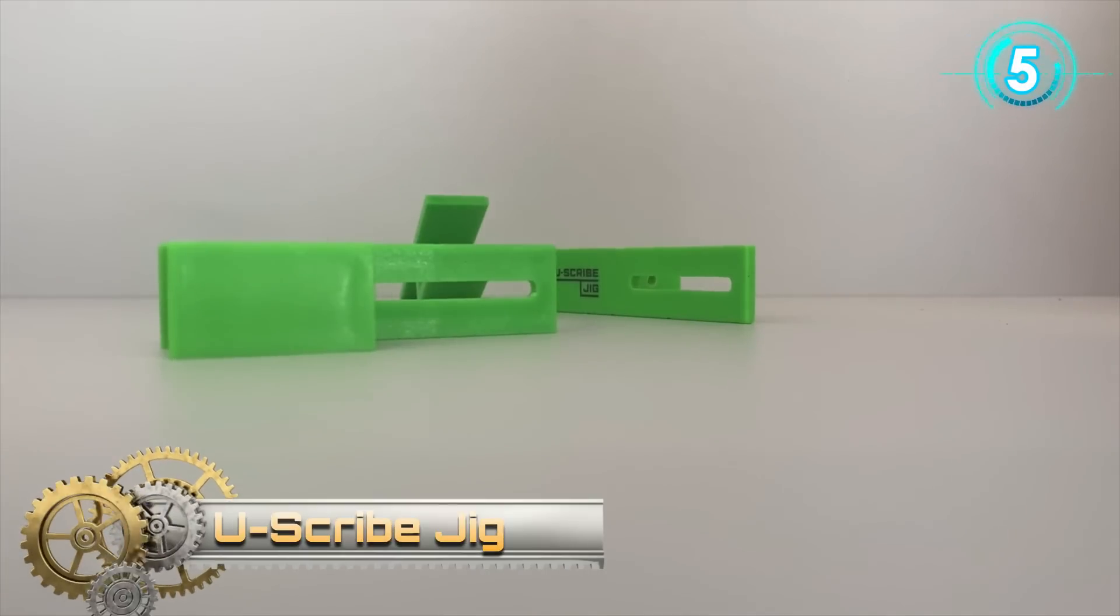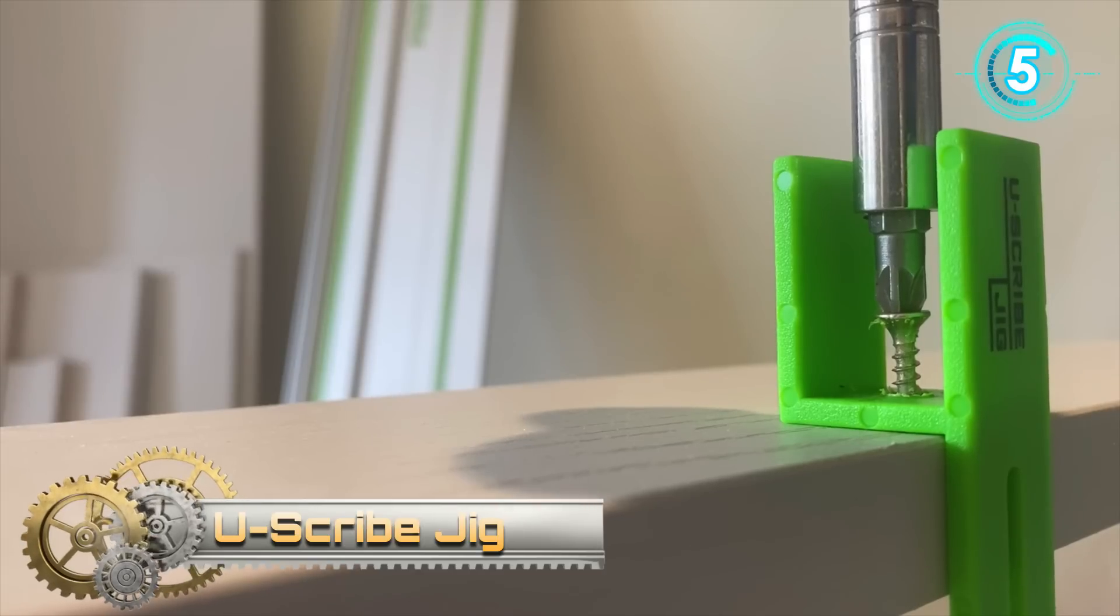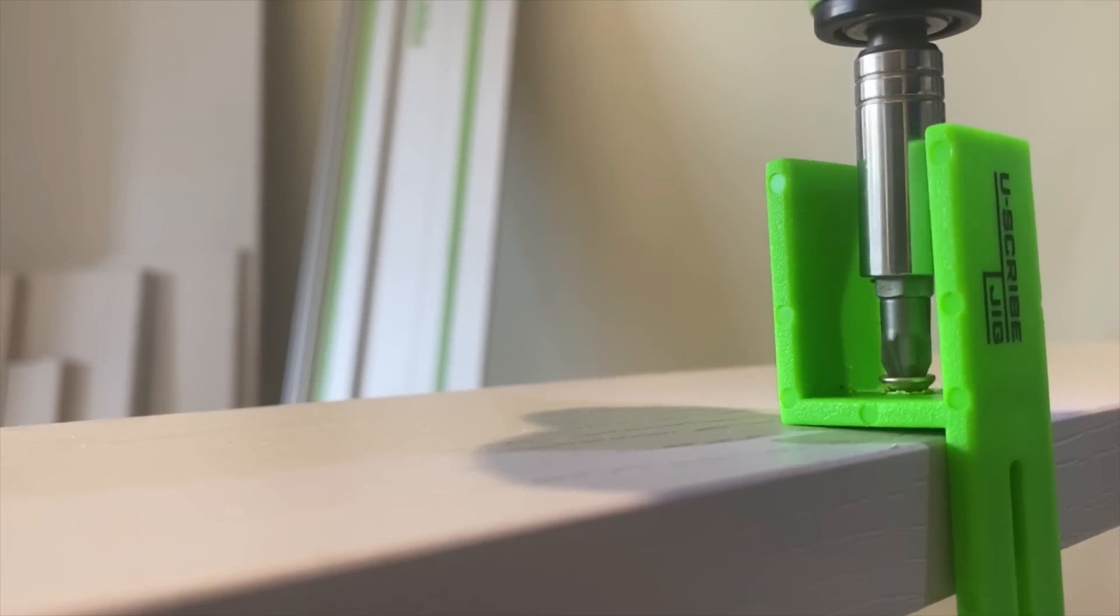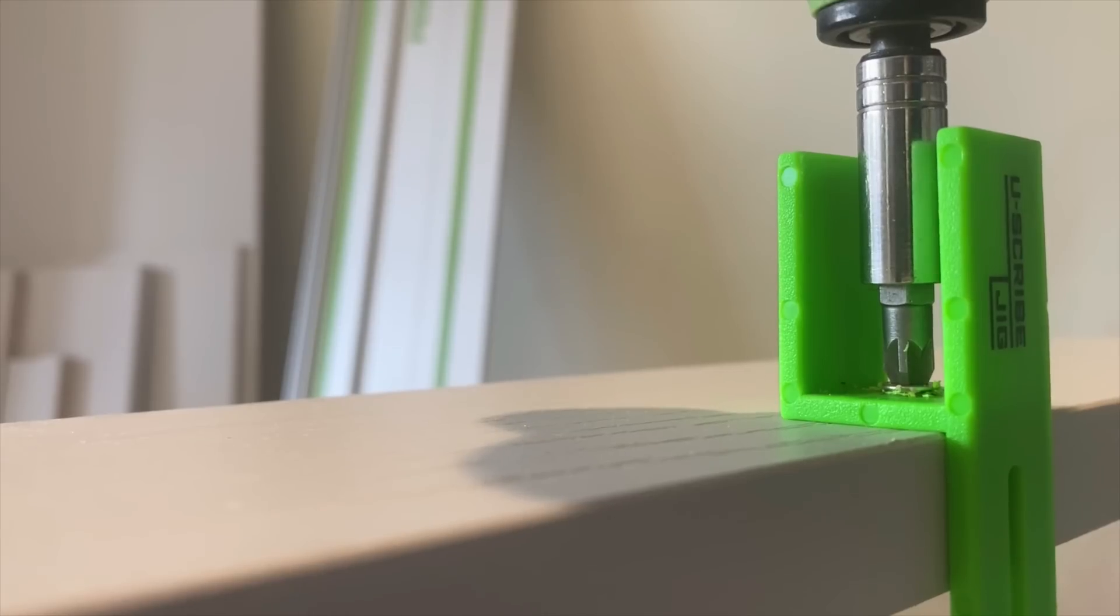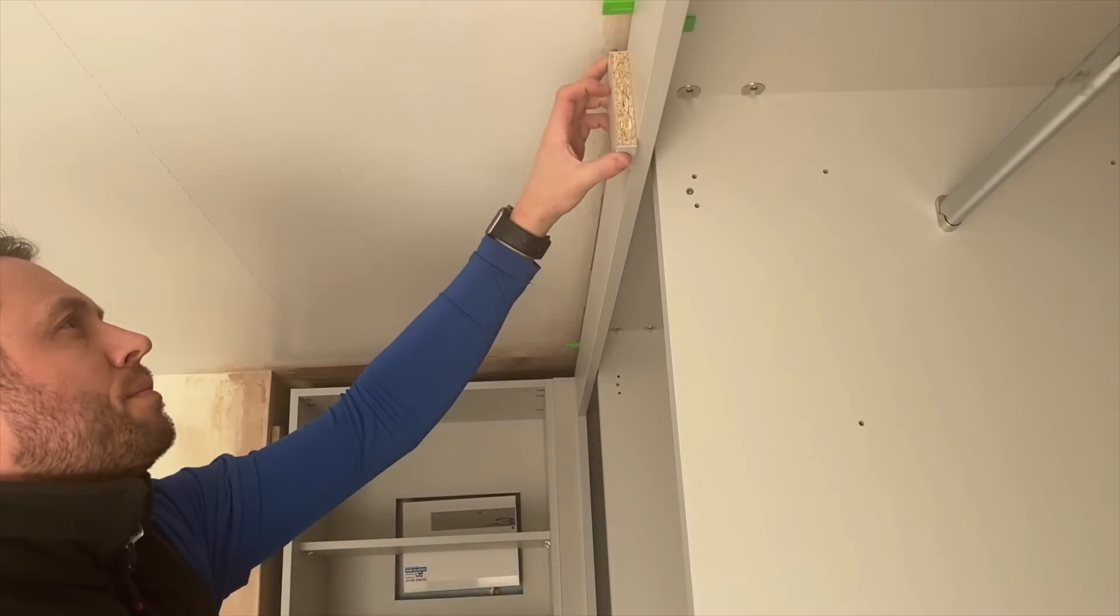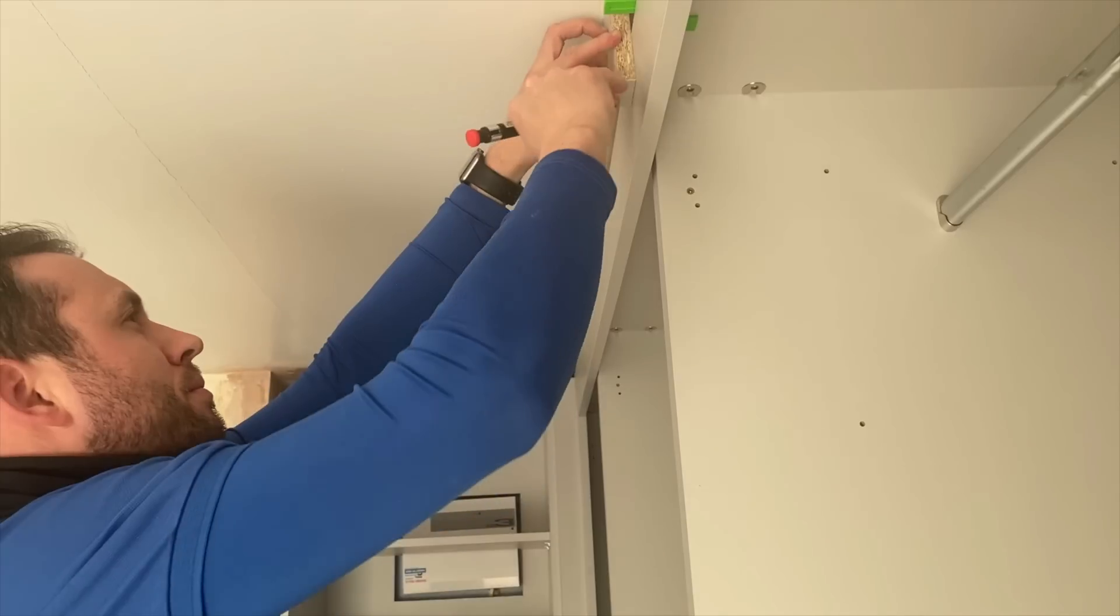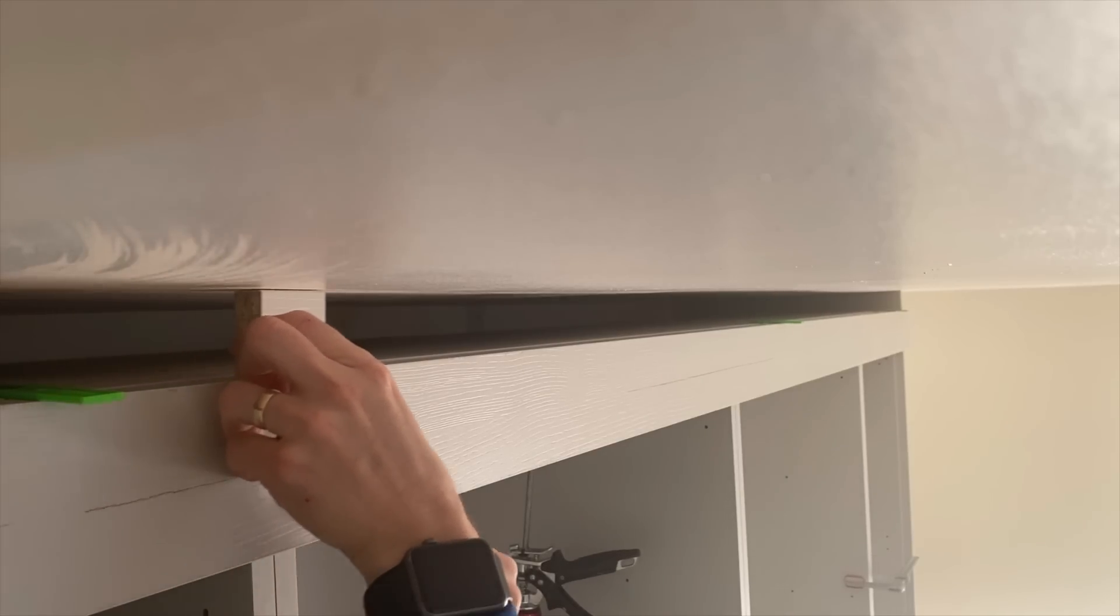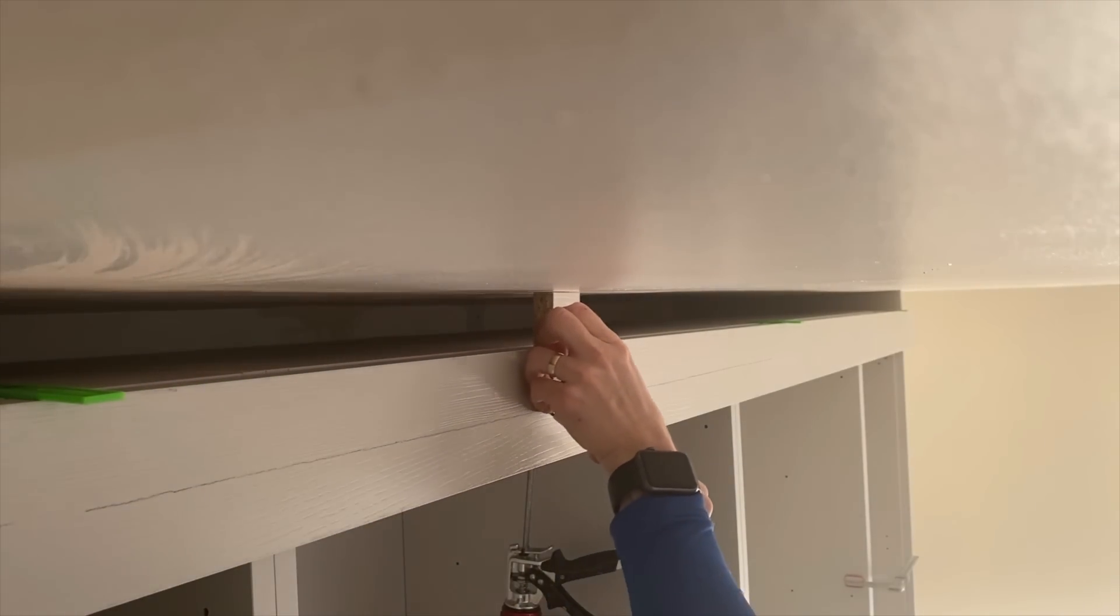Use Scribe Jig. Simply attach your Use Scribe Jig to your filler, fascia, panel, plinth, or toe kick. Use Scribe Jig attaches to the back of the material, so there's no damage to the inside edge. Simply slide into place on the side, top, or bottom of your cabinet or panel.